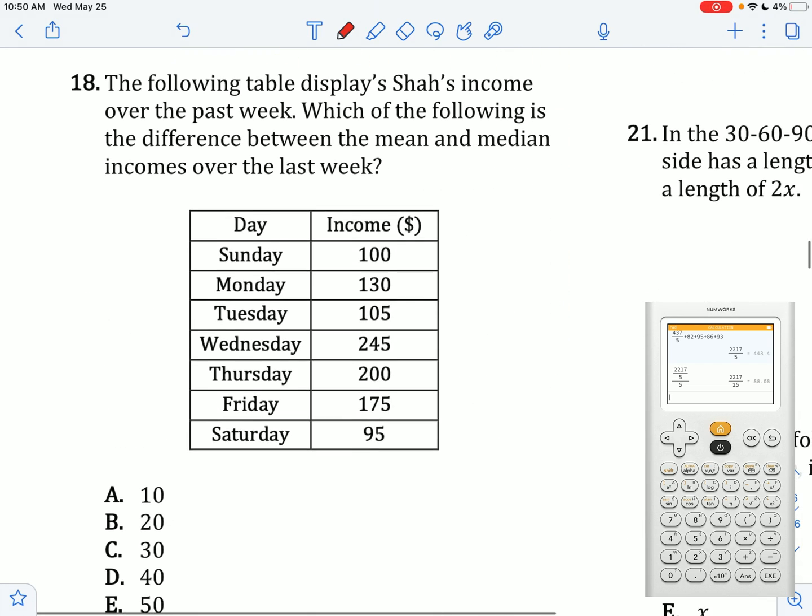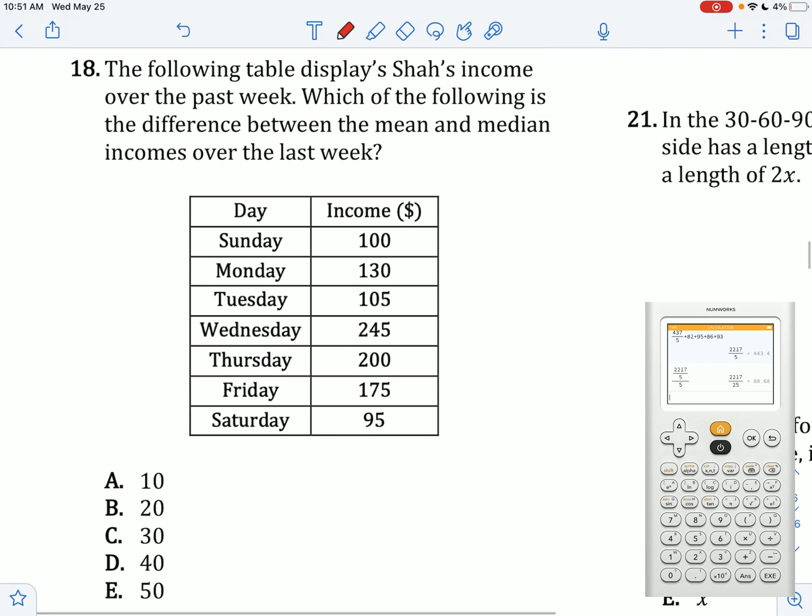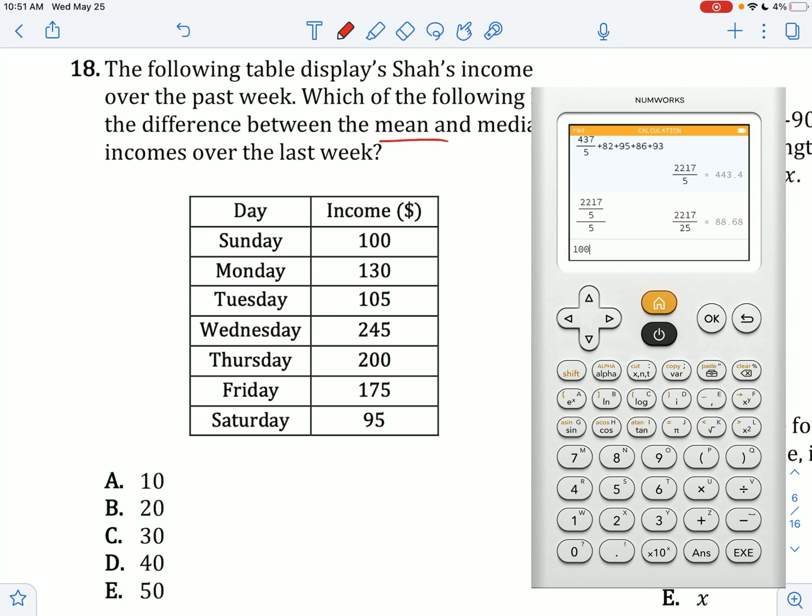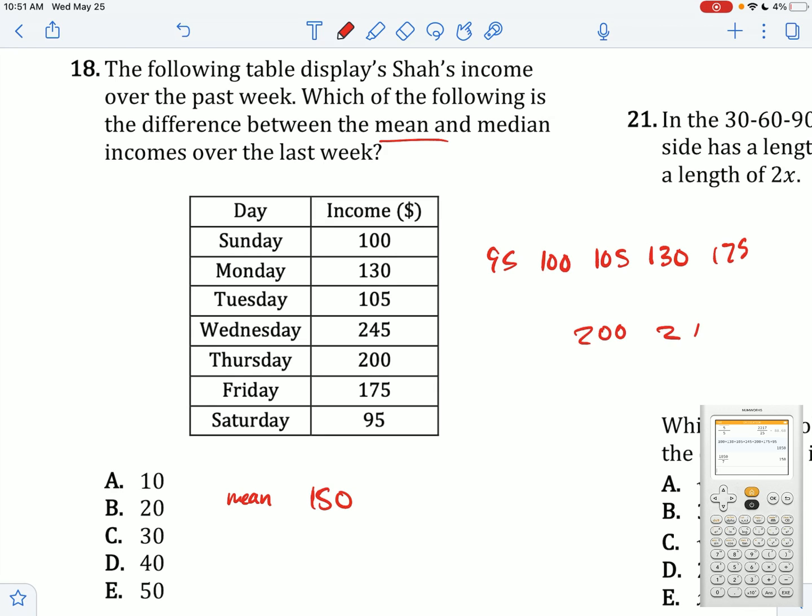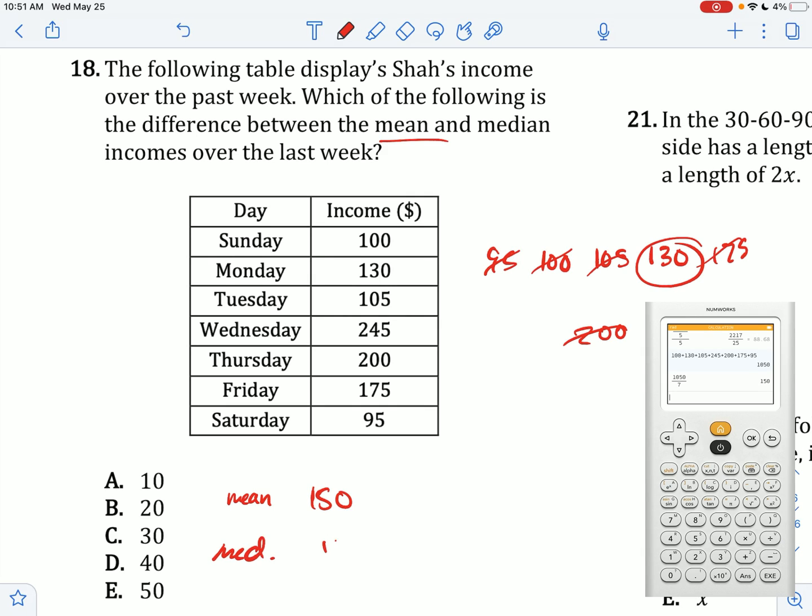The table below shows this person's income over the last week. Which of the following is the difference between the mean and median over the last week's income? The mean, I'm just going to add up all these values divided by 7. On my calculator: plus 130, plus 105, plus 245, plus 200, plus 175, plus 95. Divide that by 7, we end up getting 150 as your mean. The median, if I sort the values in increasing order and then start canceling them out: 175, 200, 245. Cancel left, right, left, right, left, right. The middle value is 130. The difference is 20.